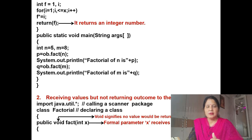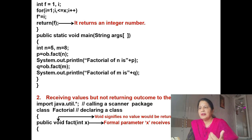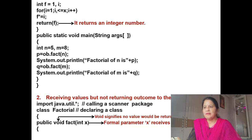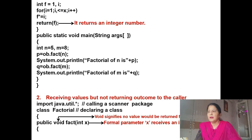Now we call from main: 'public static void main(String args)'. We take int n = 5 and m = 8. Then 'Factorial ob = new Factorial'. Then 'p = ob.fact(n)' and similarly 'ob.fact(m)' — fact is called by passing an integer each time.